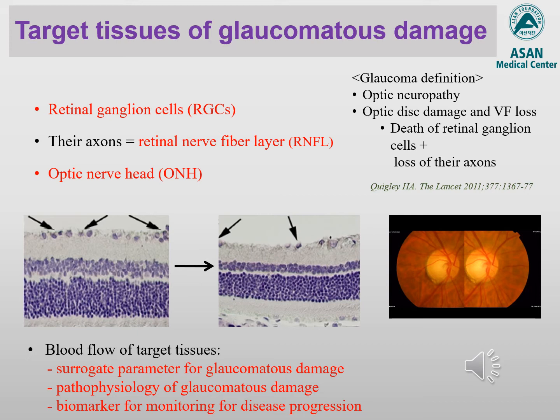First, blood flow can be used as a surrogate parameter for glaucoma damage. Second, studying blood flow at these target tissues can help us to study the pathophysiology of glaucoma damage. And lastly, blood flow deficiency can play a role as a biomarker for disease monitoring in a given patient. In the remaining presentation, I will try to convince you of what I just mentioned with various existing studies.